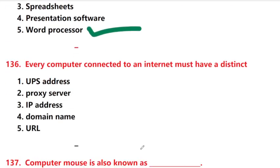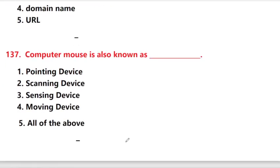Every computer connected to the internet must have a distinct — UPS address, proxy server, IP address, domain name, or URL? Answer is option 3: IP address (Internet Protocol).